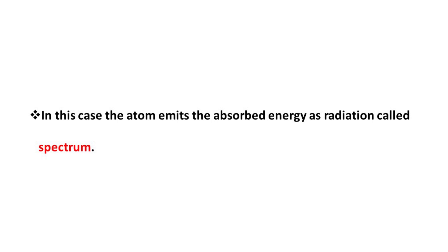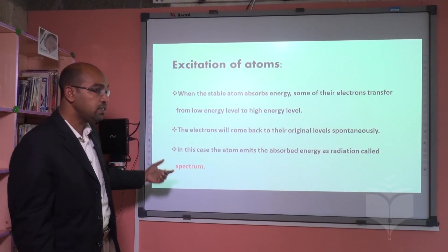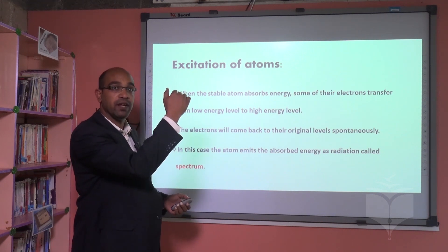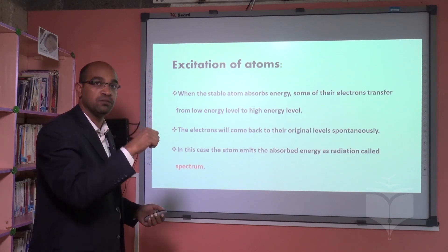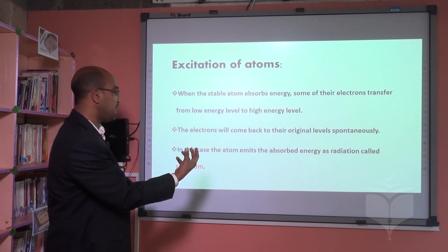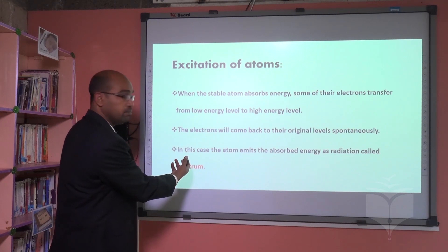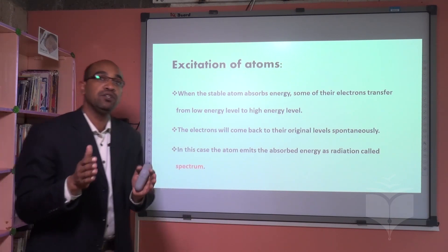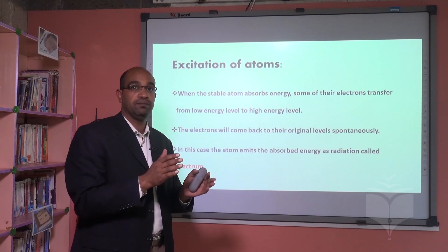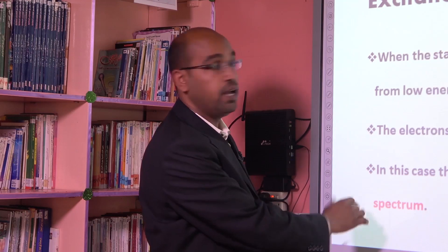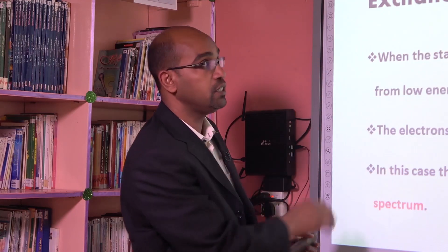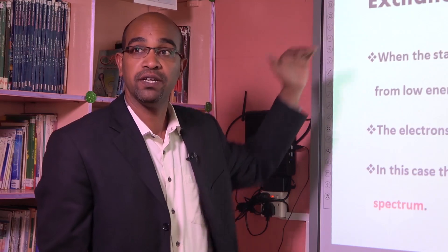Point three: the atom emits the absorbed energy as radiation called a spectrum. When the electron returns from a higher level to a lower level, it gives out the same energy it absorbed before, and this energy is released as a spectrum. Spectrum here means a collection of radiations together. These three points explain the excitation process of atoms very well.